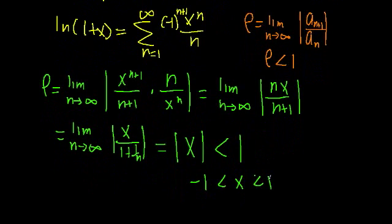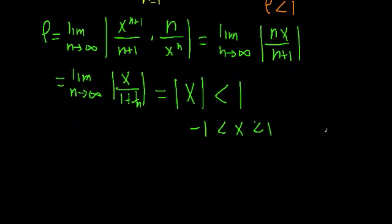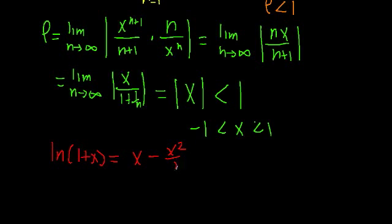So here we have a condition or criteria for convergence. Now to see the full criteria, we have to check the endpoints — what actually happens at x equal to negative 1 and x equal to 1. To do that, let's rewrite our Maclaurin series expansion: ln of 1 plus x equals x minus x squared over 2 plus x cubed over 3 minus x to the 4th over 4, and so on. We're going to plug in x equal to negative 1 and x equal to 1, and see if the series converges or diverges.